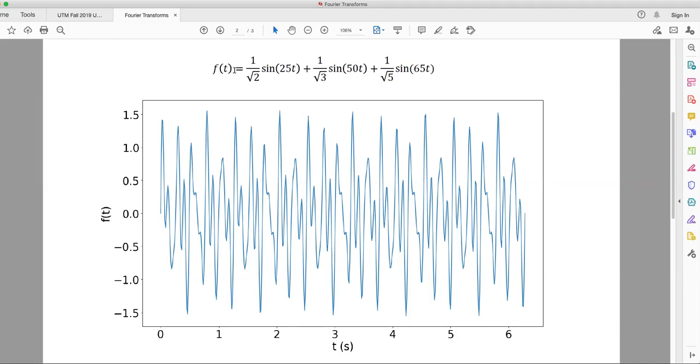If you were to plot this superposition of signals, you will get something that looks like that. Essentially a wave train where it's not clear what the constituent frequencies of this signal are.